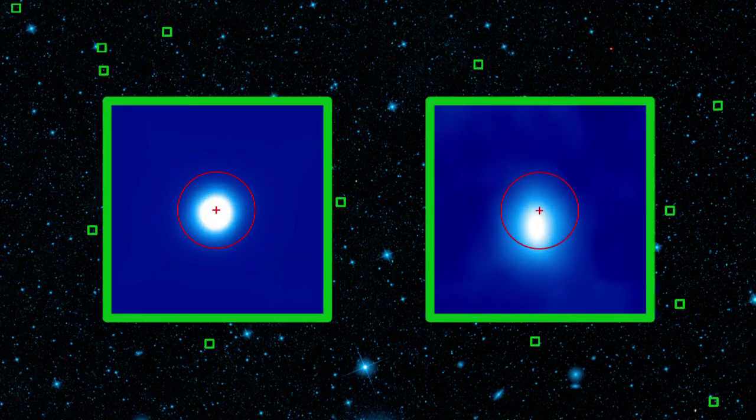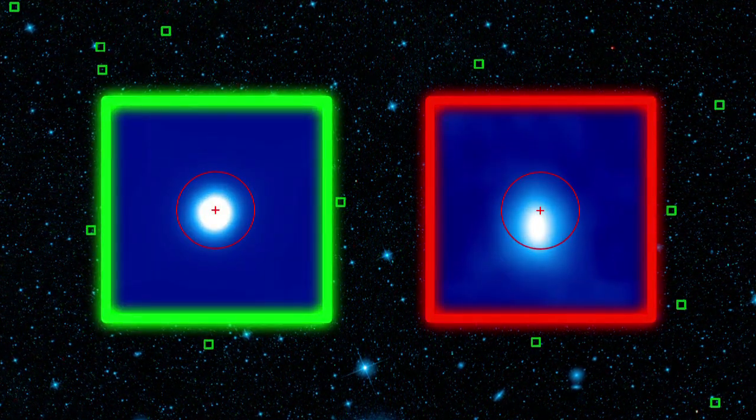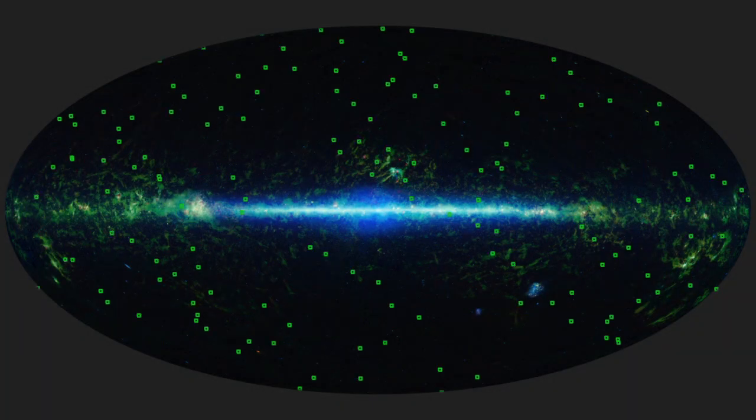The human eye can sort things out, but it would take years for astronomers to visually evaluate all these different sources.